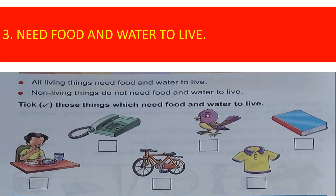Today we are going to learn about other features. Page number 74 — this is the third characteristic feature: living things need food and water to live. All living things need food and water to live. Non-living things do not need food and water to live.